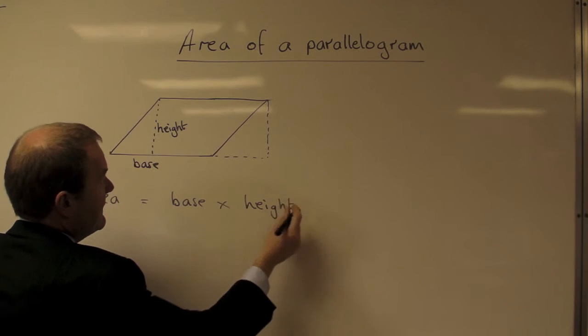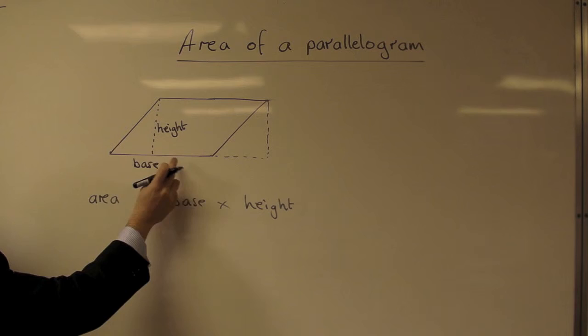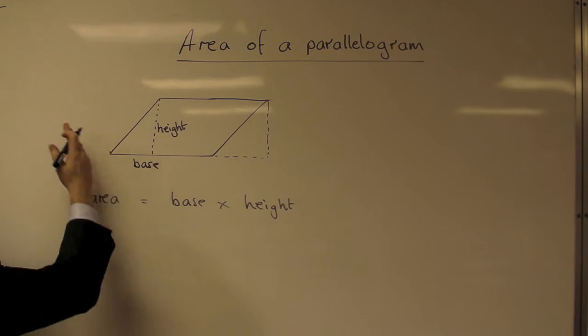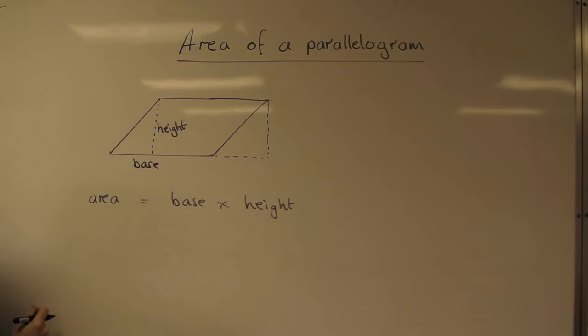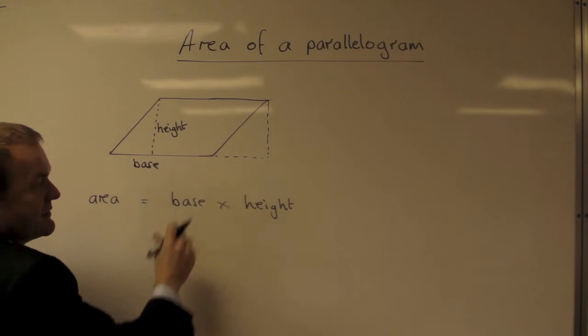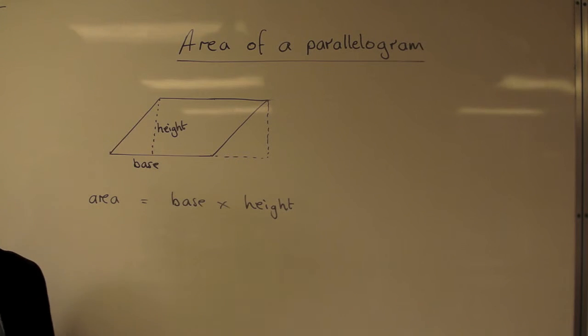But it must be the perpendicular height, straight up from the base, 90 degrees from the base, rather than the sloping height. We need to bear in mind that we've remembered it's come from a rectangle in order to remember that.